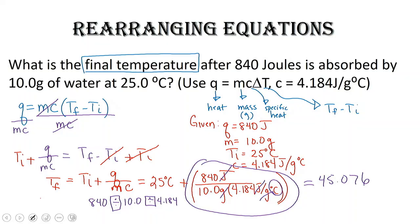Now, we've got to make sure that we have the right number of significant figures. We started out with 840 joules, it had 2 sig figs. 10 grams has 3 sig figs, and 25.0 degrees has 3 sig figs. So our answer should only have 2 sig figs. So it's going to be 45 degrees Celsius.